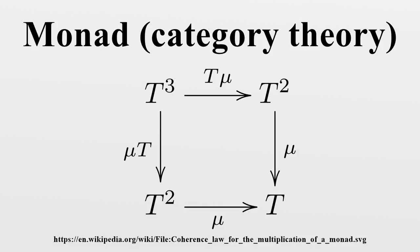In category theory, a branch of mathematics, a monad is an endo-functor, together with two natural transformations.